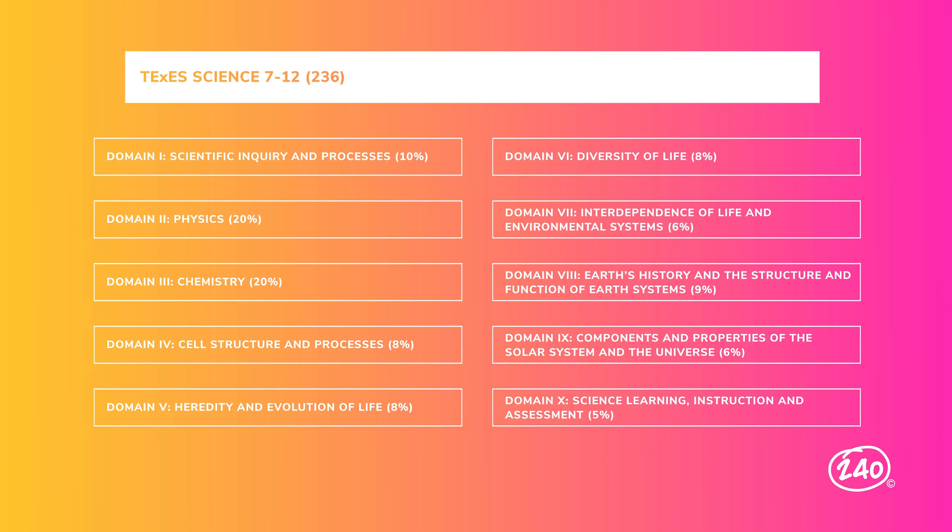Domains 2 and 3 are the largest, with physics and chemistry each making up 20% of the exam. Each domain covers one or more of the educator standards for this field. Inside each domain, you'll find multiple competencies. Today we'll touch on six of the ten domains — the six most important to know. Then at the end, you'll get a chance to answer some practice questions.